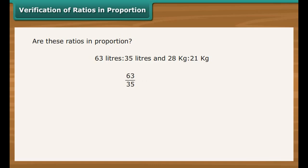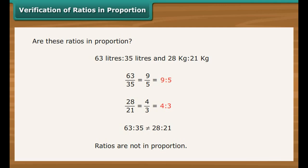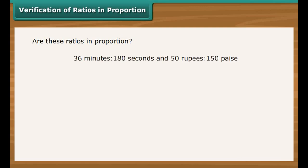Consider two more ratios: 36 minutes is to 180 seconds and 50 rupees is to 150 paise. 36 minutes by 180 seconds equals 36 into 60 seconds divided by 180 seconds, which equals 12 is to 1. 50 rupees divided by 150 paise equals 5000 paise divided by 150 paise, which equals 100 is to 3. Therefore, 36 minutes is to 180 seconds is not equal to rupees 50 is to 150 paise — the ratios are not in proportion.